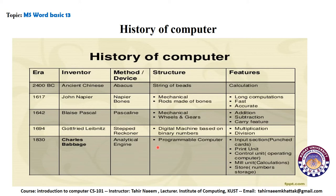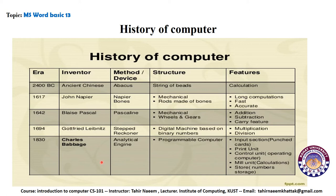In 1830, Charles Babbage introduced the Analytical Engine, which we can consider the first truly programmable computer. It had an input section using punch cards, a print unit for output, a control unit for operation, a mill unit for calculation, and storage — making it a remarkable device. Babbage is considered the father of modern computer, as his device contained all the necessary ingredients: input, processing, storage, and computation.